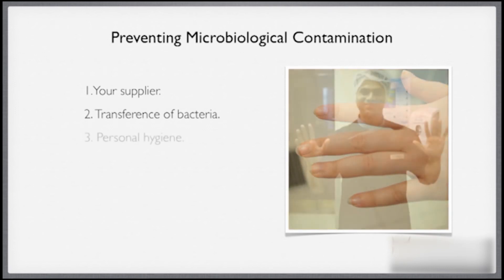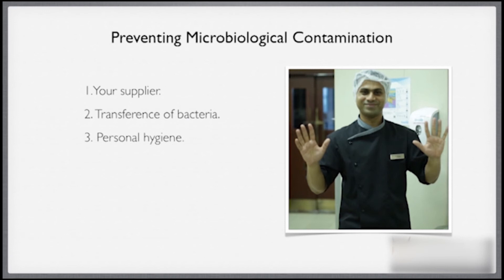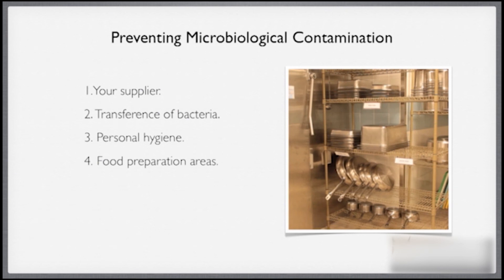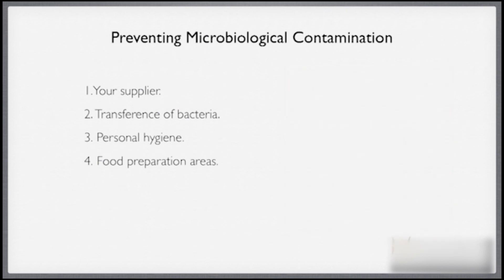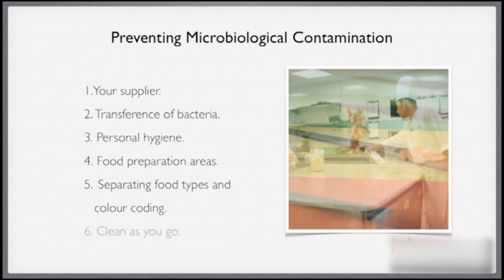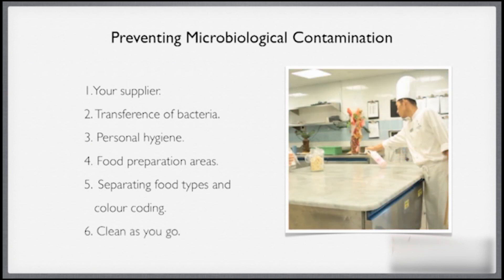Number three: your personal hygiene must be perfect. Number four: food preparation areas must be clean and hygienic. Number five: food types must be separated, and the correct equipment colour should be coded. Number six, most importantly: clean as you go. Well done if you remembered all six of these points. If you missed one or two, have another look at the lesson until you know all of the ways that microbiological contamination can be prevented. Good luck.